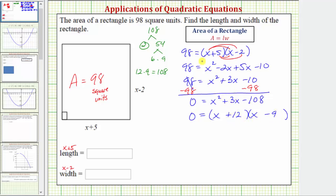And now from here, if this product is equal to zero, either x plus 12 equals zero, or x minus nine equals zero. Solving for x, we subtract 12 on both sides here, x equals negative 12. Adding 9 on both sides here, we get x equals positive 9.